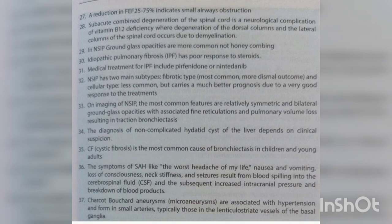Subacute combined degeneration of the spinal cord is a neurological complication of vitamin B12 deficiency, where degeneration of the dorsal and lateral columns occurs due to demyelination. In NSIP, ground glass opacities are more common — not honeycombing. Idiopathic pulmonary fibrosis has poor response to steroids. Medical treatment for IPF includes pirfenidone or nintedanib.